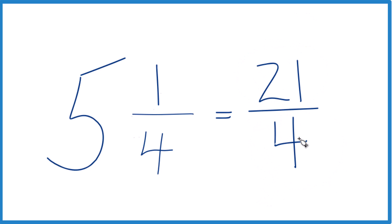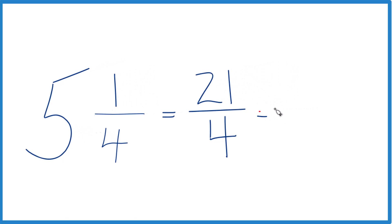And we can check this, too, because 4 goes into 21 five times. 5 times 4 is 20, and then we just have 1 left over. Bring the 4 across, 5 and 1 fourths.